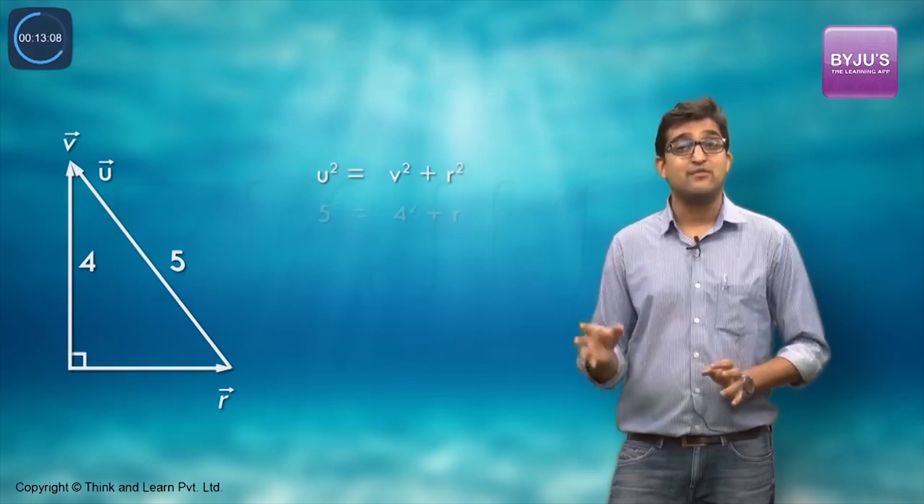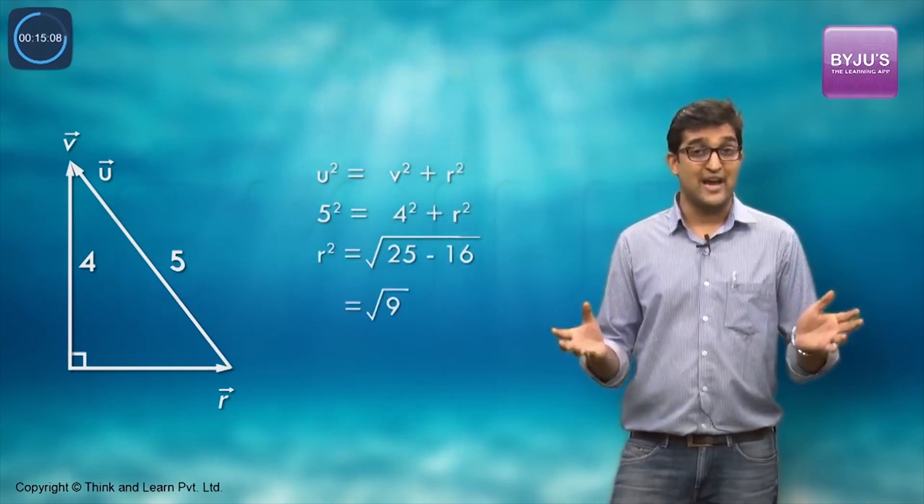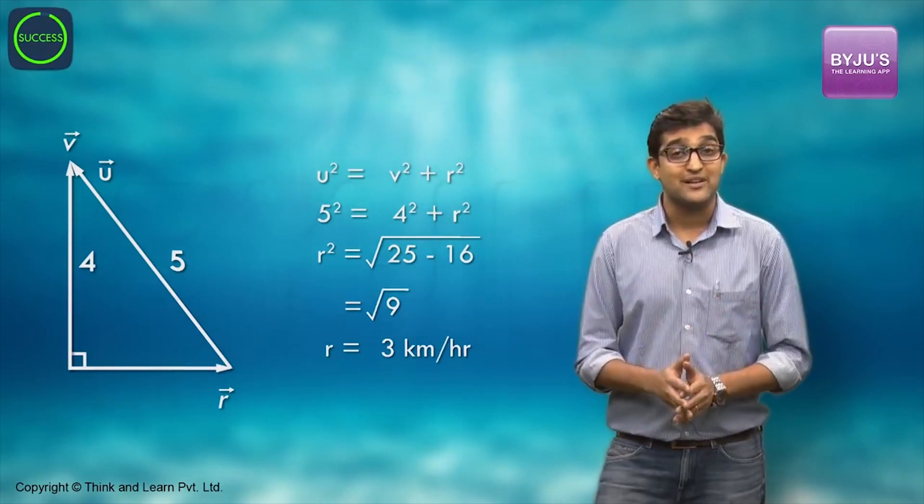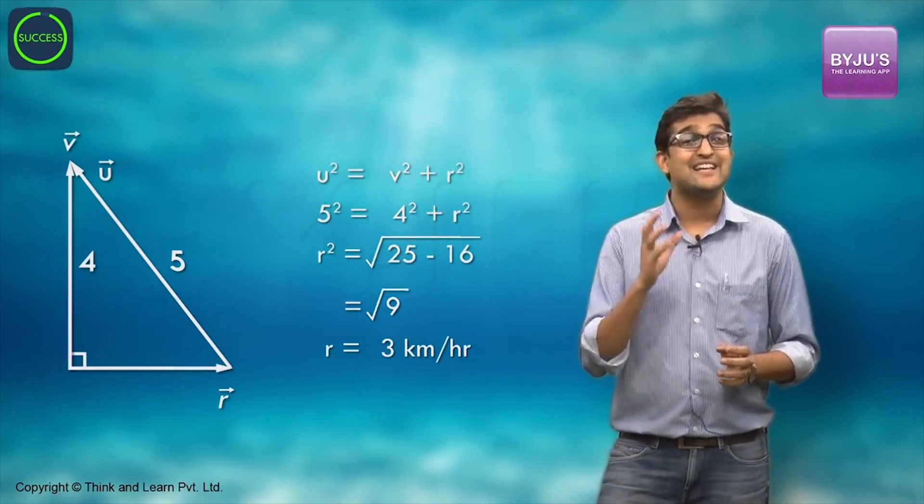We know two of these triplets, that's 5 and 4. The third, you know the answer should be 3 km per hour. Hence, the river speed is 3 km per hour. We have solved it in less than 30 seconds.